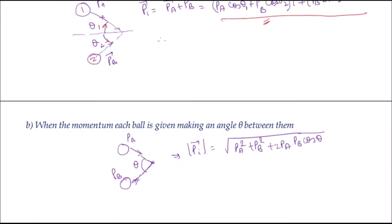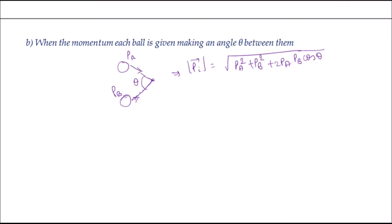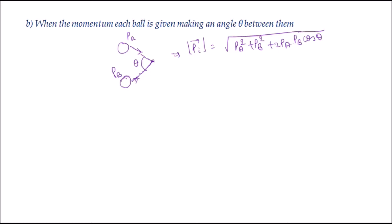A second case: when the angle between the momenta of two bodies is θ, we use vector addition. The total initial momentum magnitude is √(p_A² + p_B² + 2·p_A·p_B·cosθ), where p_A = m₁u₁ and p_B = m₂u₂. These calculations are important for solving collision problems where you must find the initial total momentum before applying conservation of momentum.